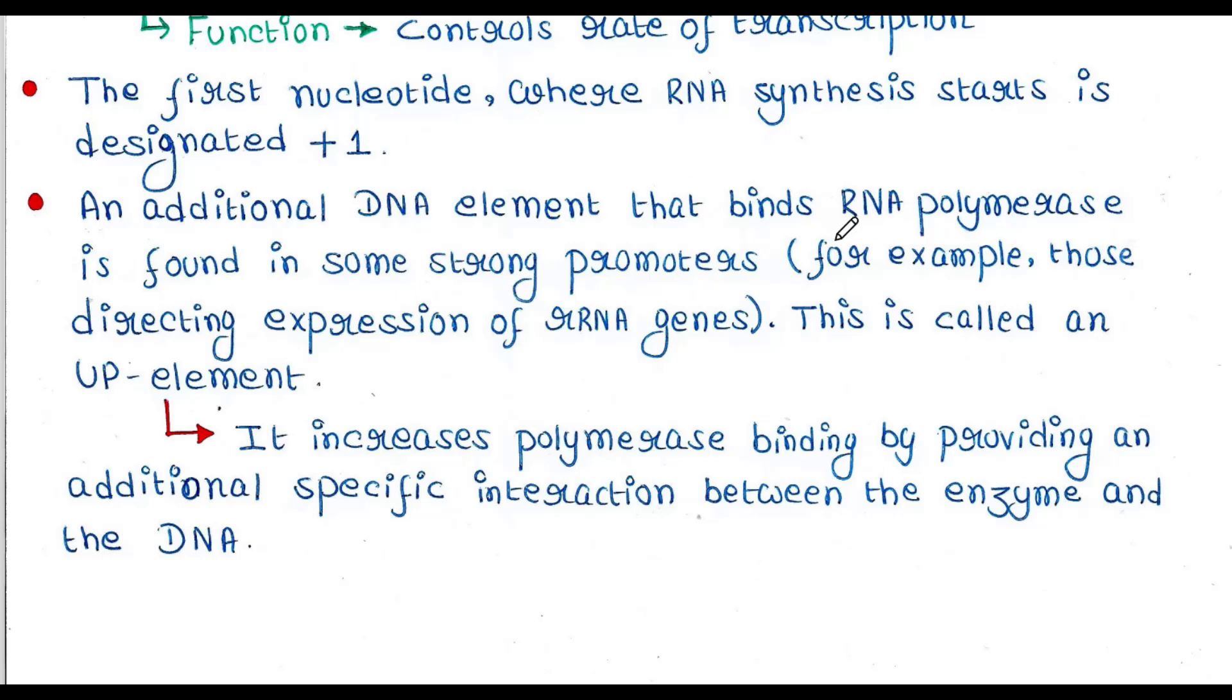For example, this is present when rRNA genes are getting expressed. The UP element is not present in all prokaryotic promoters. Some promoters contain this UP element. It increases polymerase binding by providing an additional specific interaction between the enzyme and the DNA.